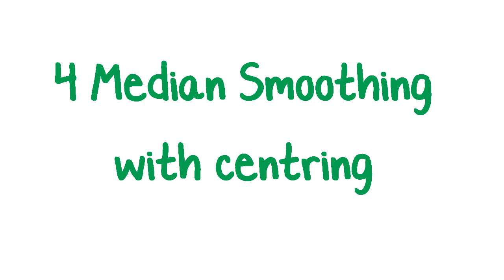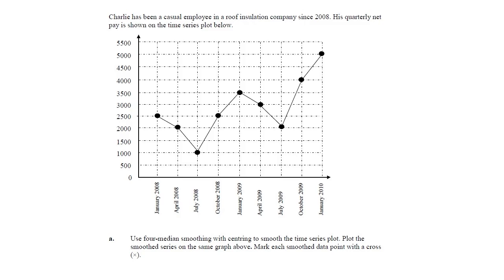Median smoothing straight onto a graph is okay when you have an odd number of points, but when you have an even number of points in the groups that you're smoothing it gets a little bit tricky because it's a couple of steps involved when you do the centering. So I'm going to run through what that looks like for median smoothing with centering straight onto a graph.